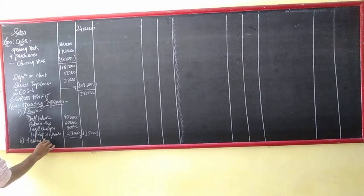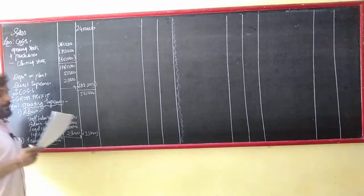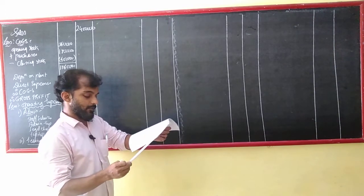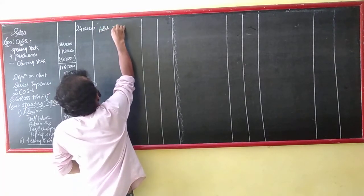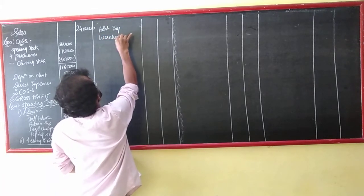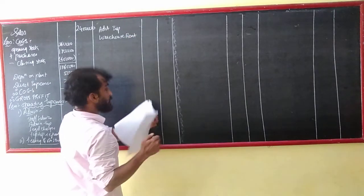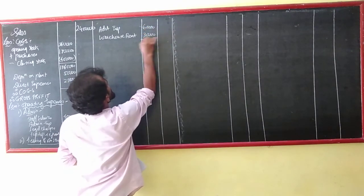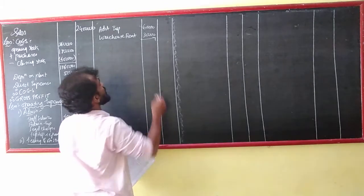Selling and distribution expenses. Do I have any selling and distribution expenses? Advertising expenses and warehouse. So advertising expenses and warehouse. 60,000 and 30,000. So 90,000.